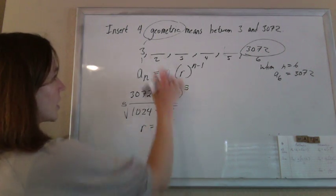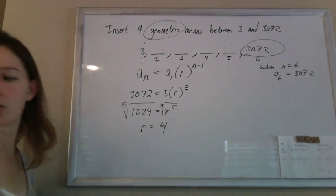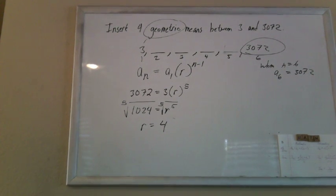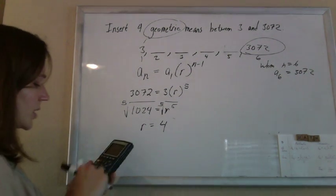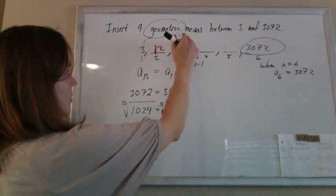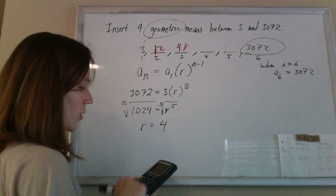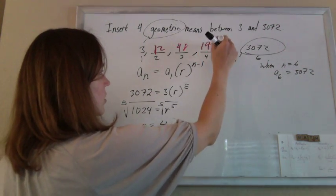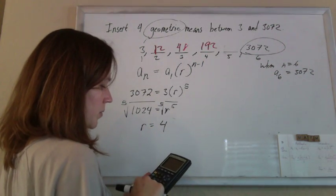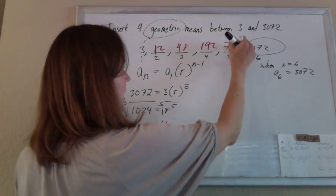So now the numbers that are going to go in here, the geometric means, are going to be 3 times 4 is 12, times 4 is 48, 48 times 4 is 192, 192 times 4 is 768,